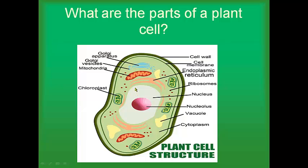Then we have this big thing right here called the nucleus. The nucleus is the control center of the cell — it basically controls what the cell does and tells it what it needs to do to function. We're going to find out later in the year that inside of this nucleus is something called DNA, and that DNA gives the cell instructions on what kind of proteins to make and how it needs to function.